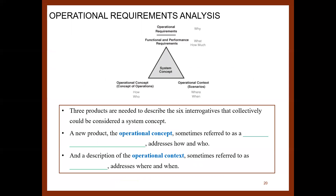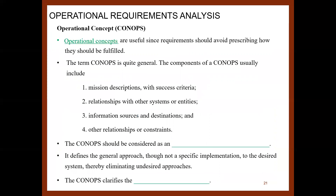Three products are needed to describe the six interrogatives that collectively could be considered a system concept. A new product, the operational concept — sometimes referred to as concept of operations or ConOps — addresses 'how' and 'who.' A description of the operational context, sometimes referred to as scenarios, addresses 'where' and 'when.' The term ConOps is quite general.